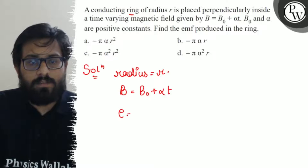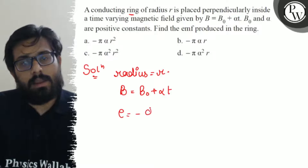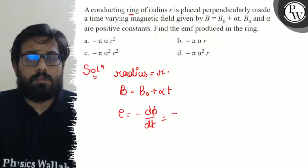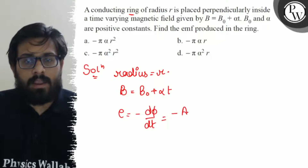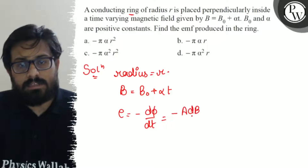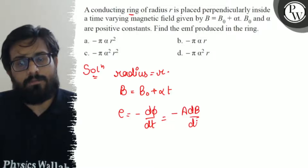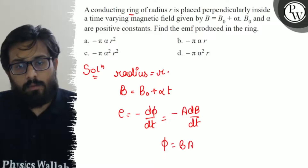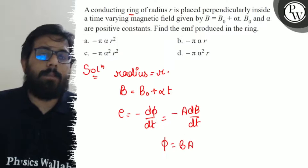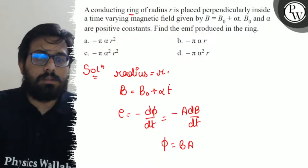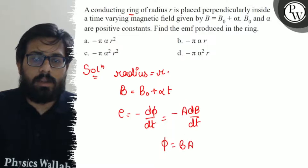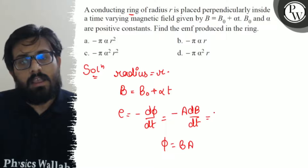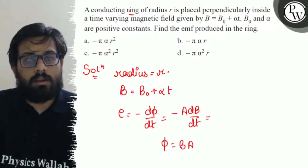So EMF equals minus dΦ/dt, which is minus A · dB/dt. Since we know that Φ = B·A, and here area is constant, so taking area outside the differentiation, we differentiate dB/dt.